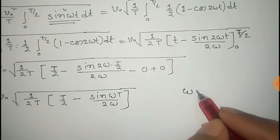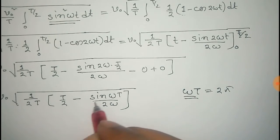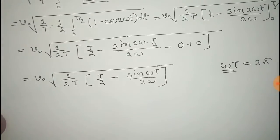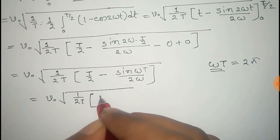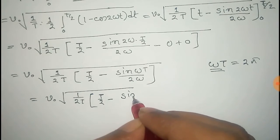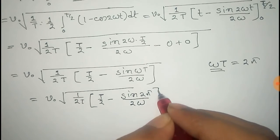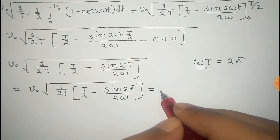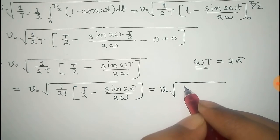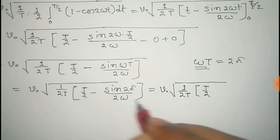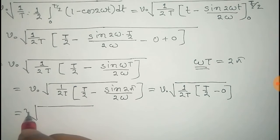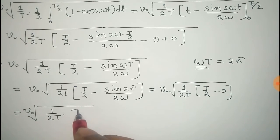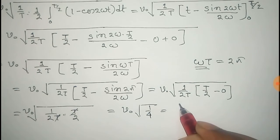We know that ω = 2π/T, so substituting this value gives V₀ times the square root of 1/(2T) times [T/2 − sin(2π)/(2ω)]. Since sin(2π) = 0, this simplifies to V₀ times the square root of 1/(2T) times T/2. The T's cancel, giving V₀ times the square root of 1/4.